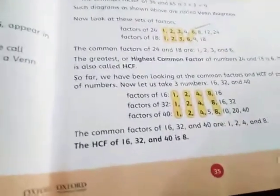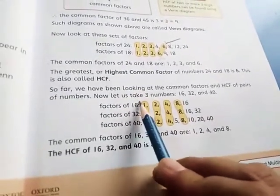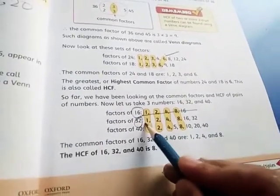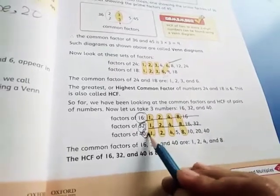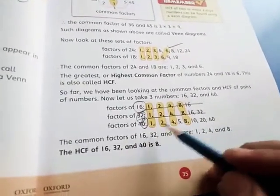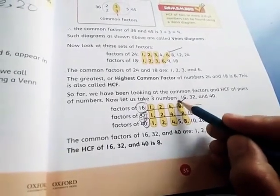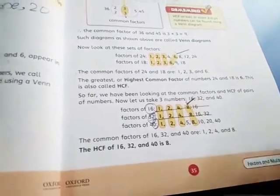Look at the next. We will take the factors of 16. These are the factors. 32, these are the factors. And 40. 1 is common, 2 is common, 4 is common, and 8 is common. Which is the greatest or highest common factor? 8. I think you have understood fully.